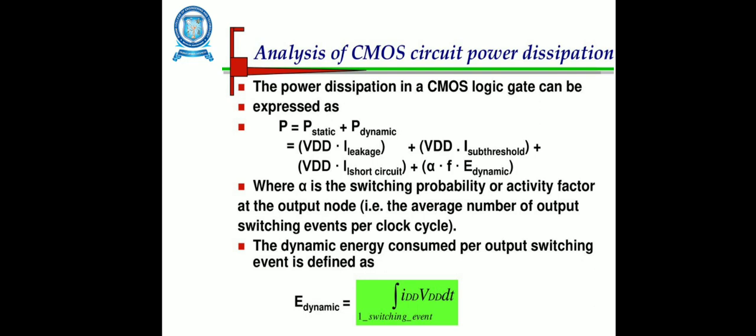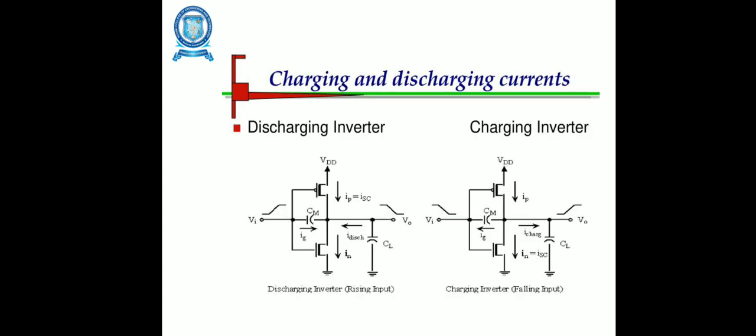Analysis of CMOS circuit power dissipation: the power dissipation can be expressed as P equals P static plus P dynamic. Power equals voltage times current, so VDD times I leakage plus VDD times I subthreshold plus VDD times I short-circuit plus alpha times F times E dynamic, where alpha is the switching probability or activity factor at the output node, that is the average number of output switching events per clock cycle. The dynamic energy consumed per output switching event is defined as E dynamic equals IDD times VDD times DT.